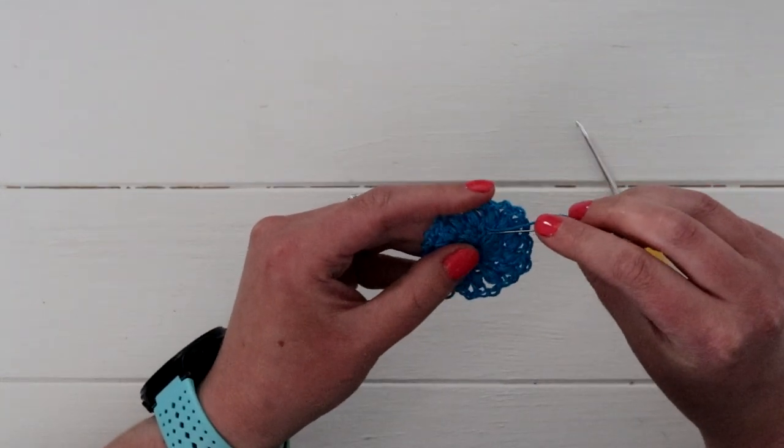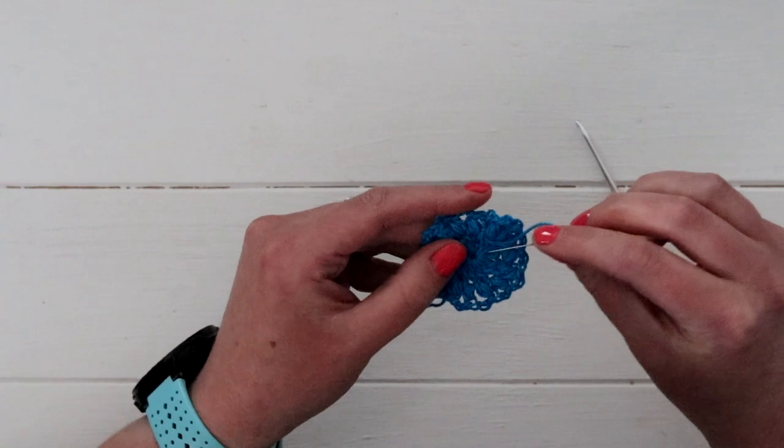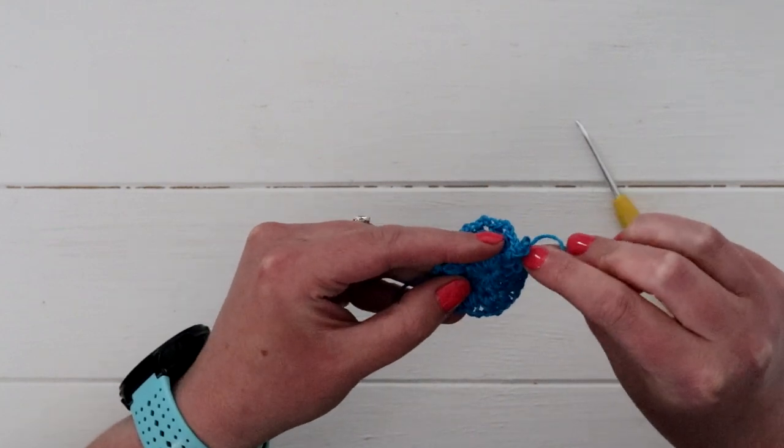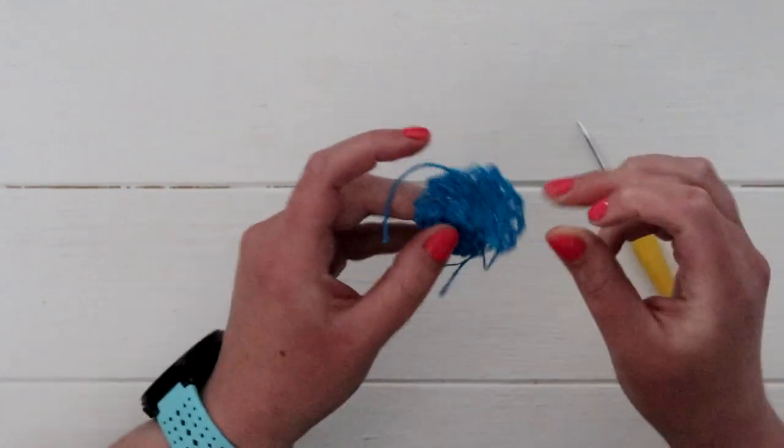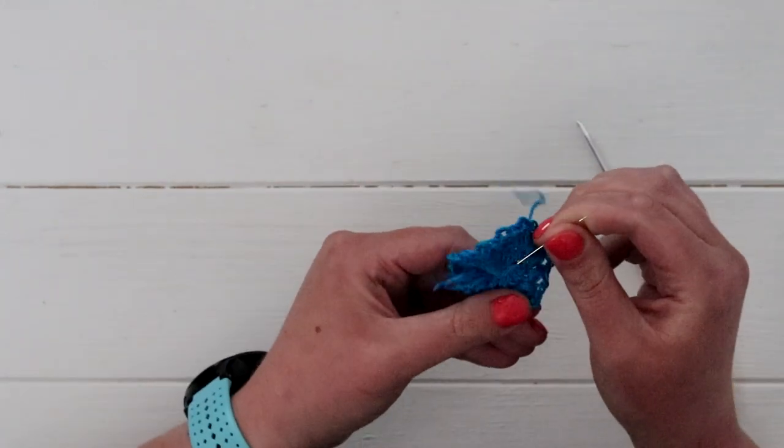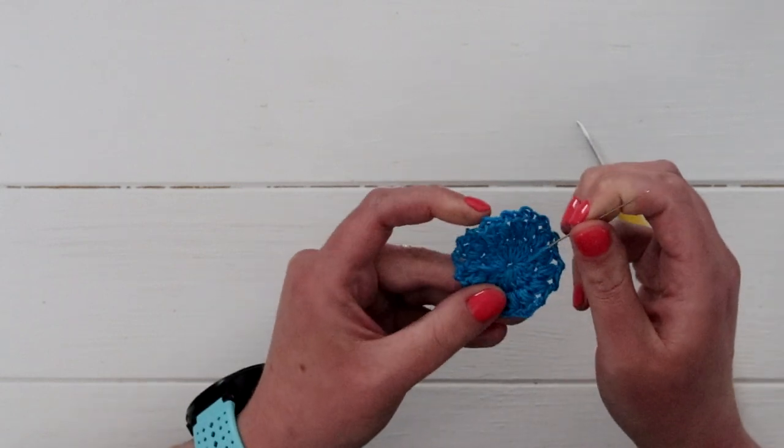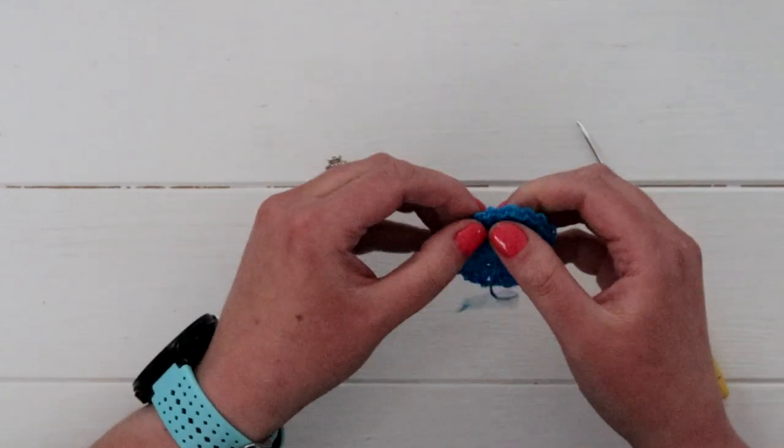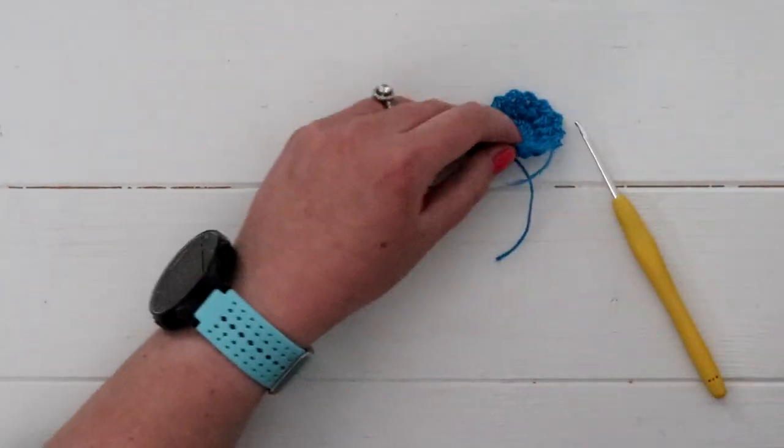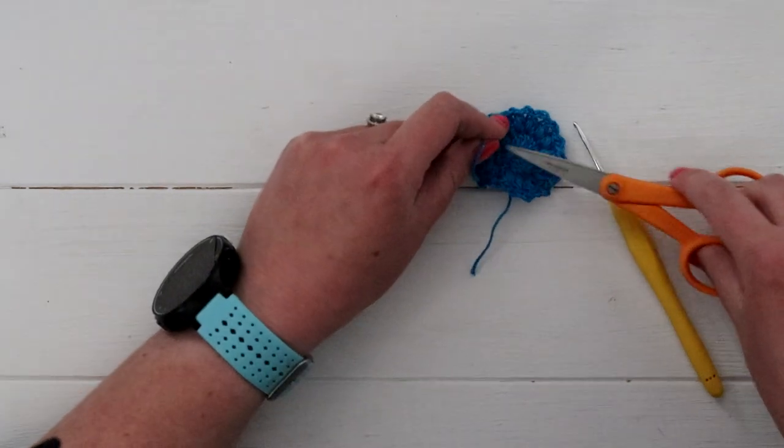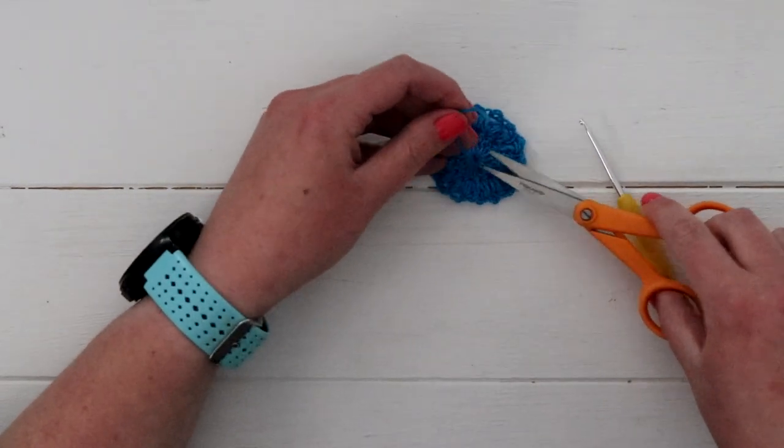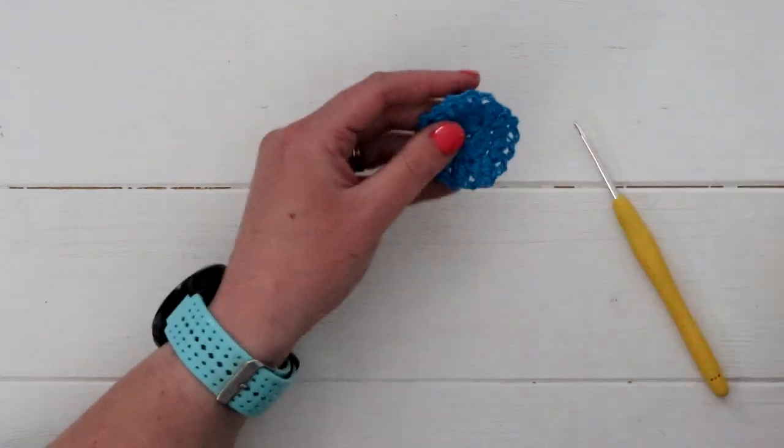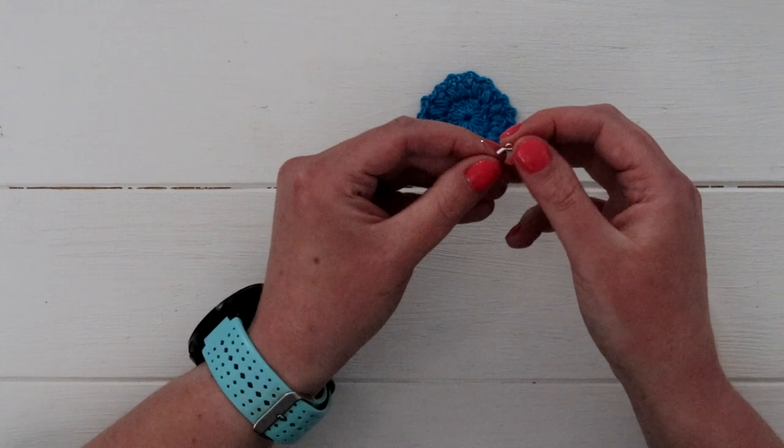So finish weaving in your ends. I'm going to trim my yarn now. But just make sure that your stuff is really secure. So usually I do a better job of weaving. Alright, so now you have your earring, and really this is all that it is. All we have to do now is just attach our earring loop.